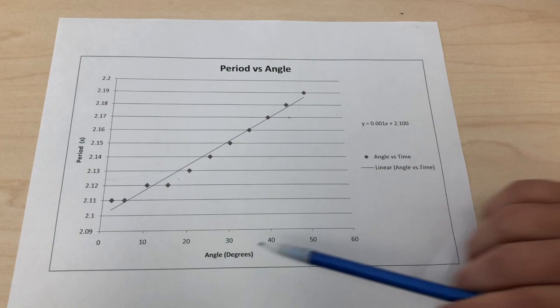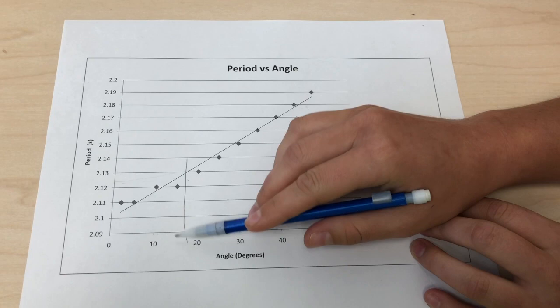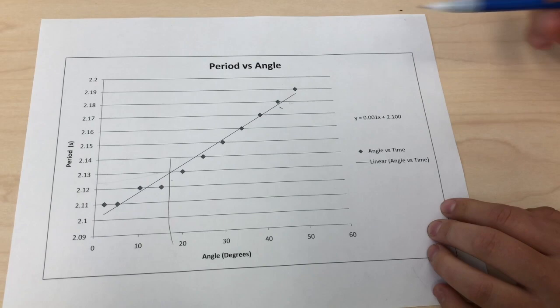As you can see here that below 15 degrees it was kind of constant and then after 15 degrees it had a steady upslope, further proving the small angle approximation.